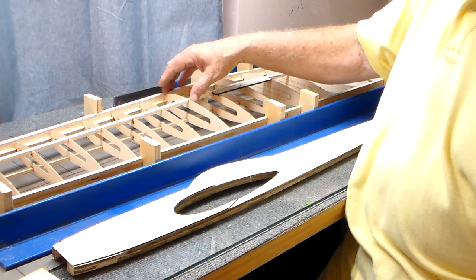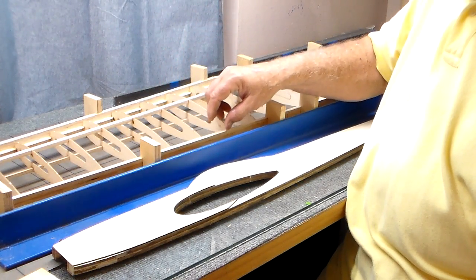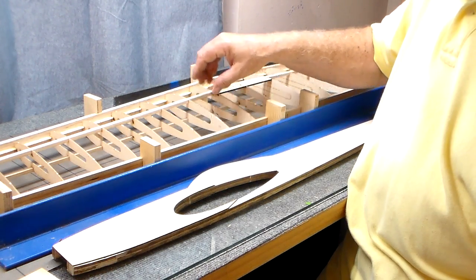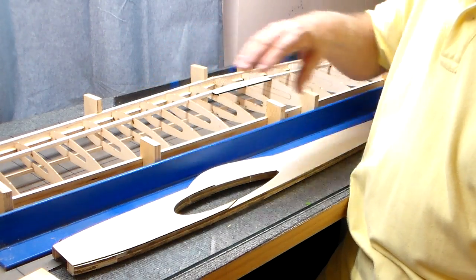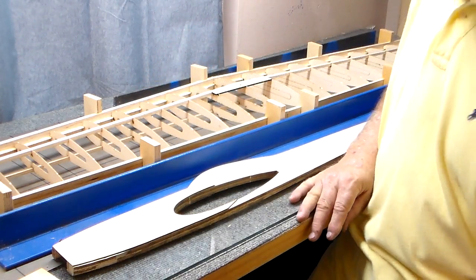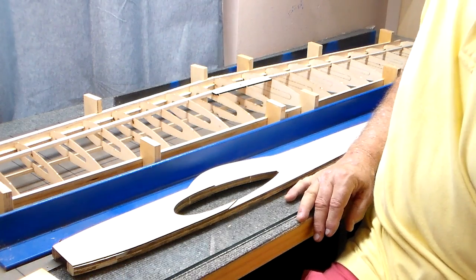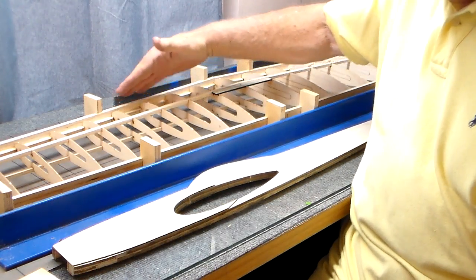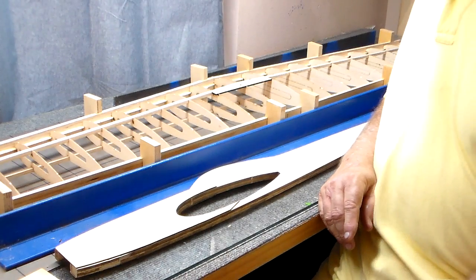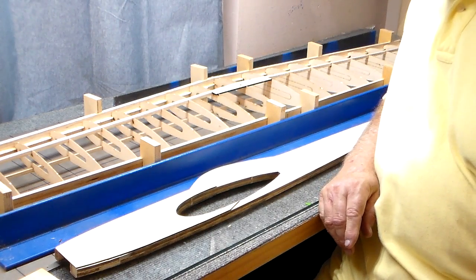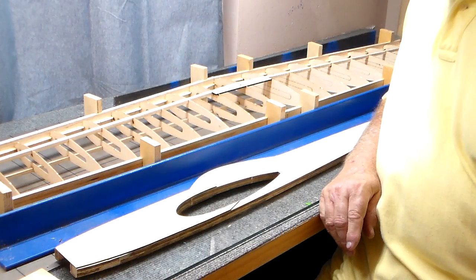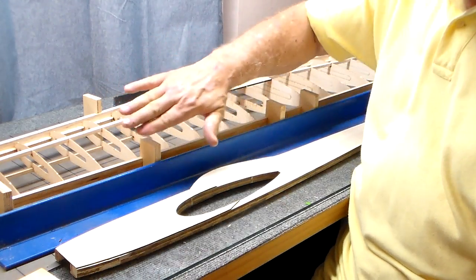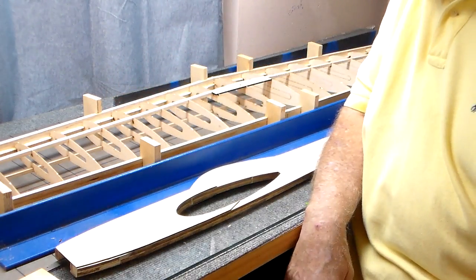This particular plane has leading edge sheeting on it and then you will have a piece of one inch wide 1/16 balsa back here for your trailing edge sheeting and then cap strips. Well designed wing, a strong wing and a very light wing. My suggestion, the way I always build these wings that have this type of leading and trailing edge that have to be cut down and shaped, is I usually put the leading edge and trailing edge sheeting on. The last thing I do is take my razor plane and start cutting the leading and trailing edges down and then I sand them to shape.